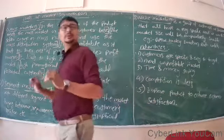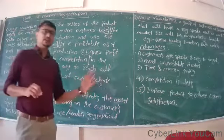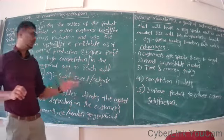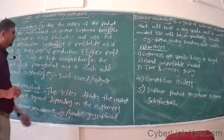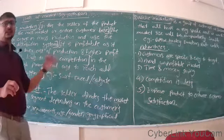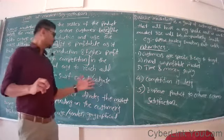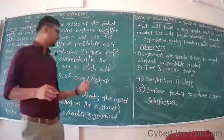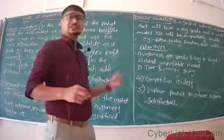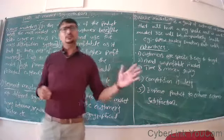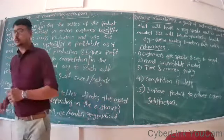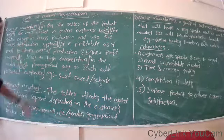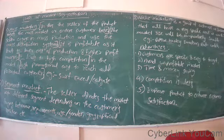The best examples are all the fast moving consumer goods — FMCG — then Surf Excel, Colgate, Close Up toothpaste, and Sunsilk shampoos. All the fast moving consumer goods can be taken as examples for mass marketing.